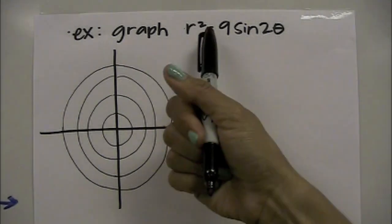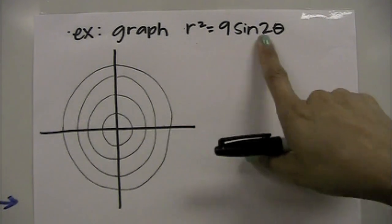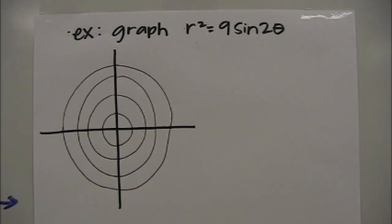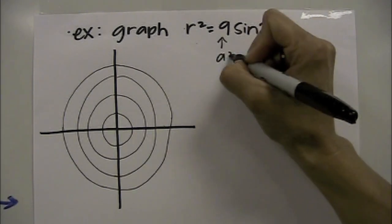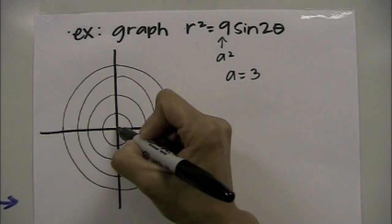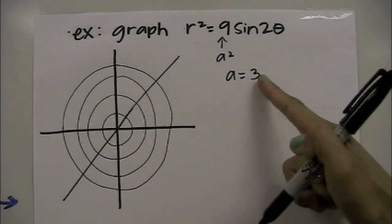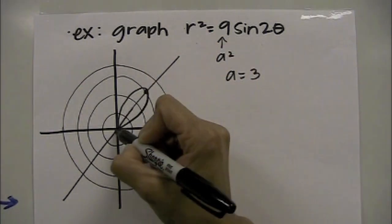For r² equals 9 sine of 2θ, always double-check that it's actually 2θ — if it were 3θ or 4θ, the graph could be something else. The 9 is a squared, so a equals 3. Because it's a sine equation, the graph falls along the line y equals x, or θ equals π/4. The length of the propeller is 3, extending in both directions along that line.